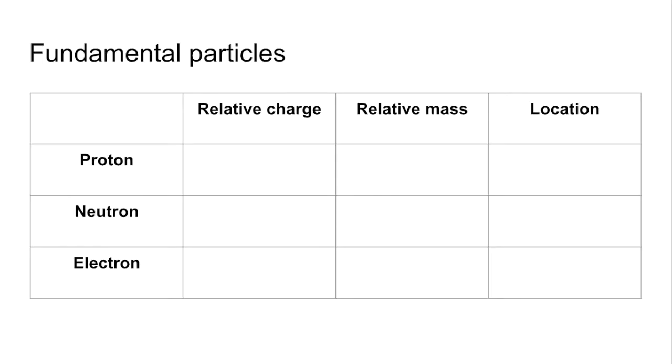So we'll start with the relative charges. Proton is 1+, neutron is 0 and electron is 1-. Relative masses now: one for the proton, one for the neutron and 1/1836 for the electron.